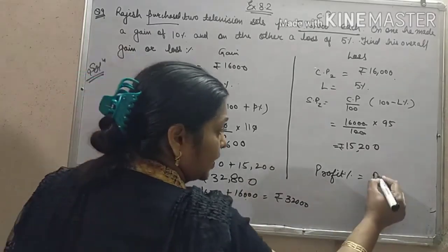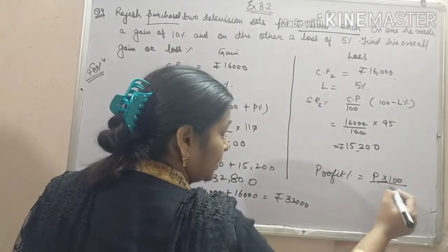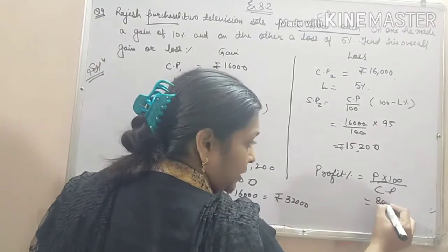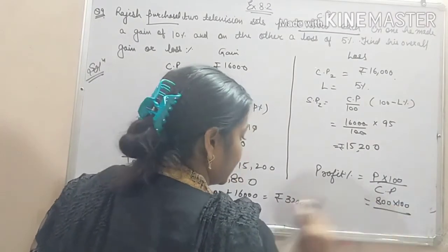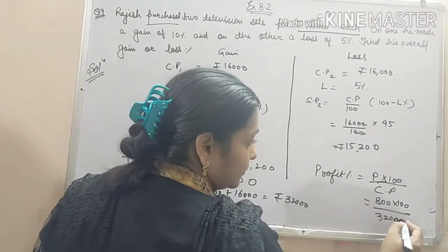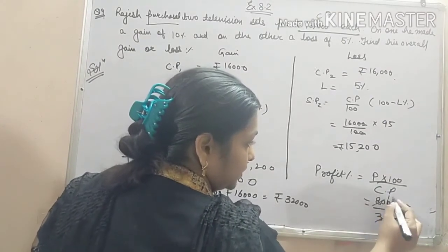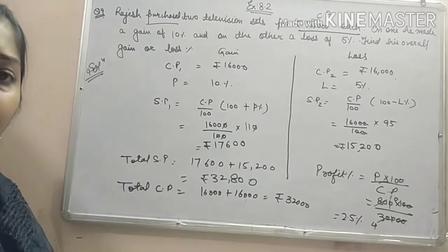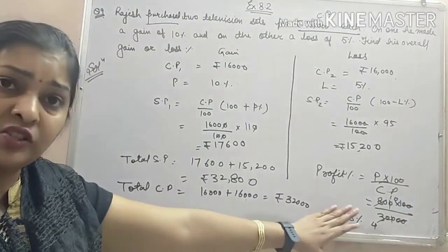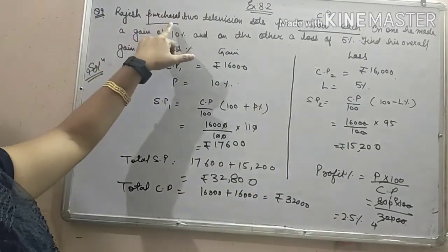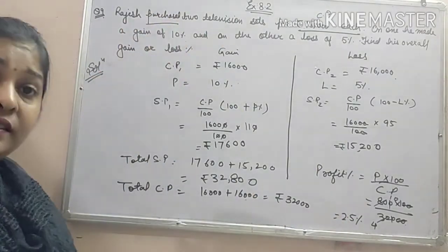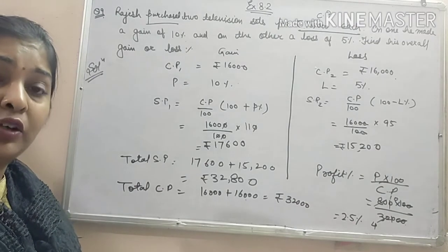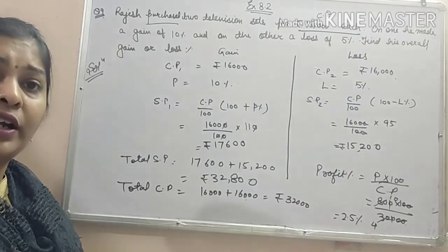Loss percentage equals loss divided by CP, multiplied by 100. Here, 32,000 minus 30,800 is 1,200. So loss percentage is 1,200 multiplied by 100 divided by 32,000, which gives 2.5%. In your book the answer is given as 2%, but the correct answer is 2.5% when the case is 'purchased'. When the case is 'sold', it will be nearly 2% — not exactly 2%, but approximately 1.92 something.